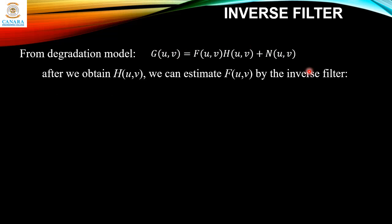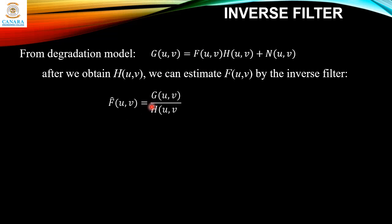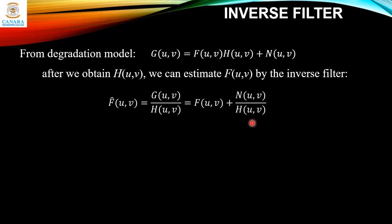After we obtain H(u,v) by using the techniques learned in previous lectures, we can estimate F(u,v) — the original image — by inverse filter. We get back F̂(u,v), the estimate of F(u,v), which equals G(u,v) / H(u,v). If you simplify it further, H(u,v) cancels in the first term, and in the second term we are left with N(u,v) / H(u,v).